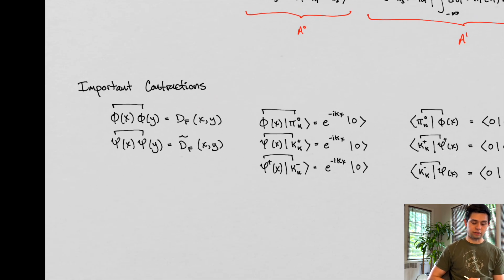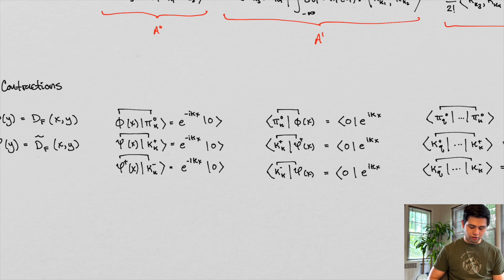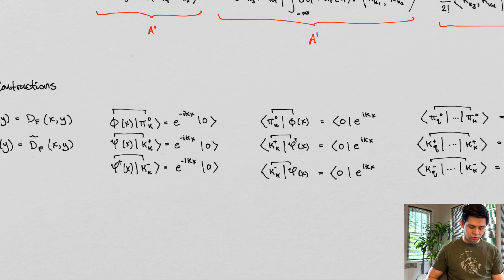We want to write down some important contractions now. We have contracting fields at one point with the same field at a different point — same thing here. These are the fields associated with the real scalar field and then the fields associated with the complex scalar field. Then we have real, complex, and the conjugate of the complex — same thing at the other interaction point. And we're contracting all those with initial states here and final states here.